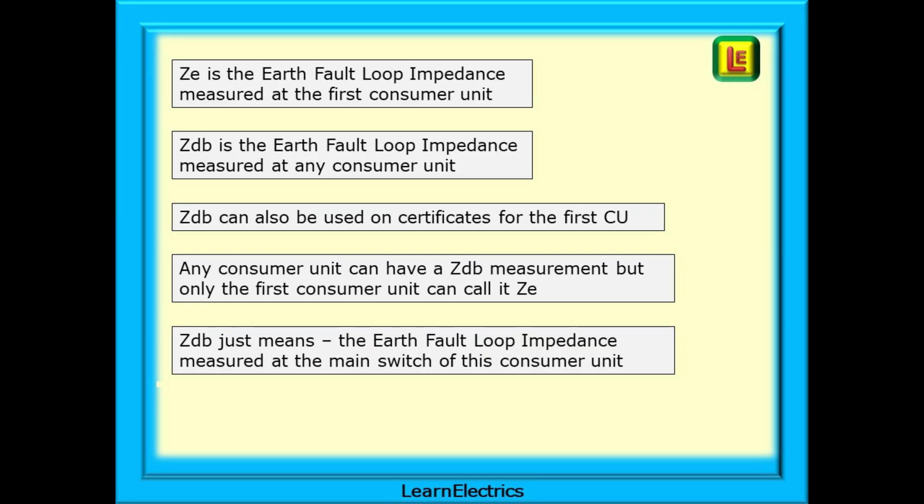A recap on this. ZE is the earth fault loop impedance measured at the first consumer unit. ZDB is the earth fault loop impedance measured at any consumer unit. So ZDB could also be used on certificates for the first consumer unit. Any consumer unit can have a ZDB measurement, but only the first consumer unit can call it ZE.